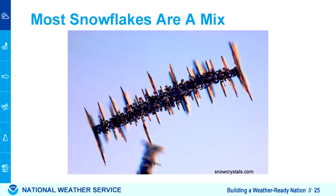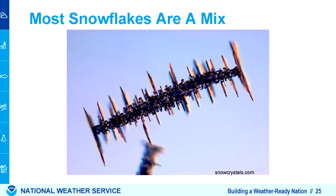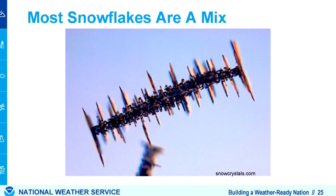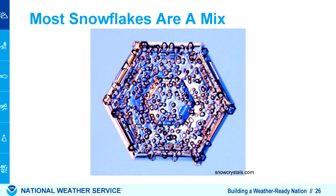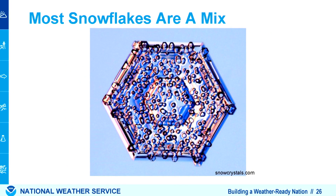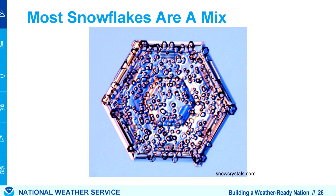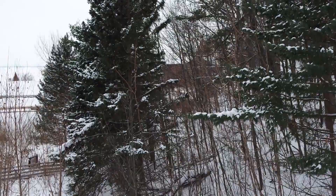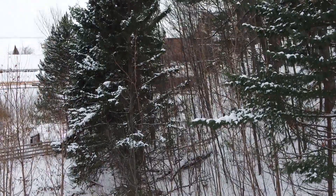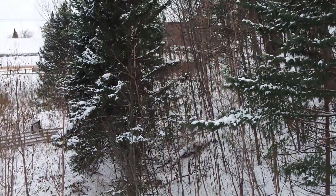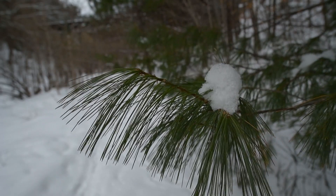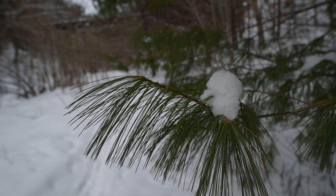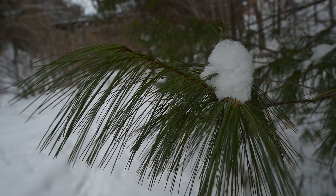The most common ice crystals are irregular because they pass through all these different temperature regimes and may collide with other crystals. Sometimes you get pristine temperature regimes where conditions are the same all the way down to the surface, and when that happens you get a very pure set of snow crystals of one type found at the surface.